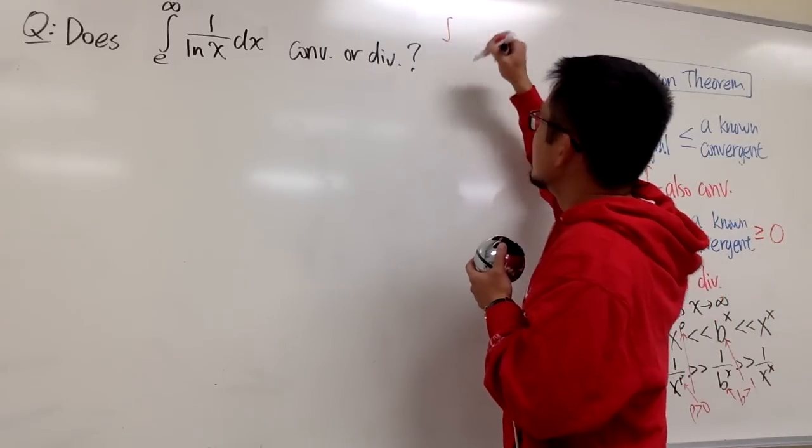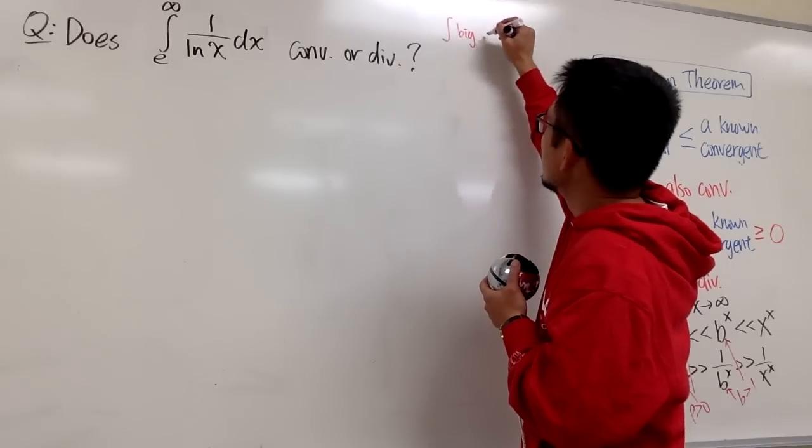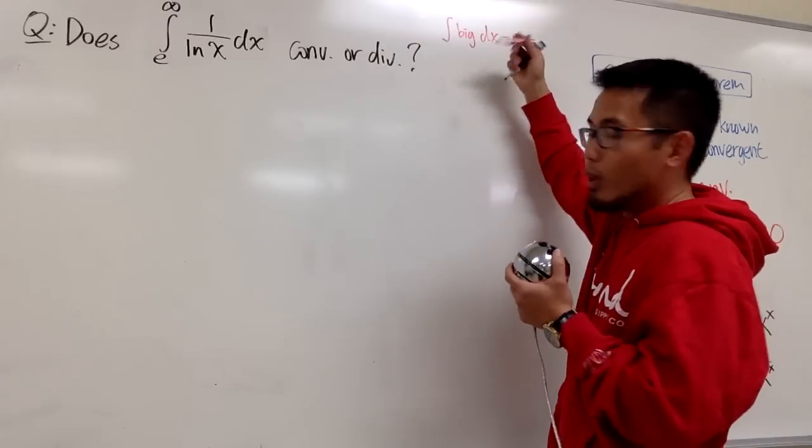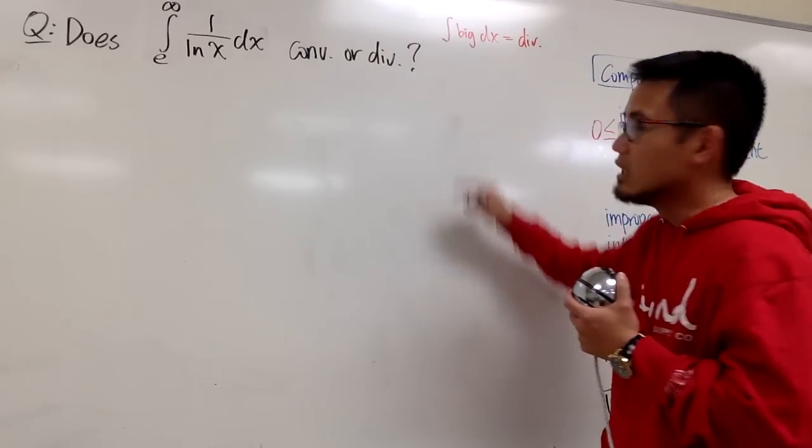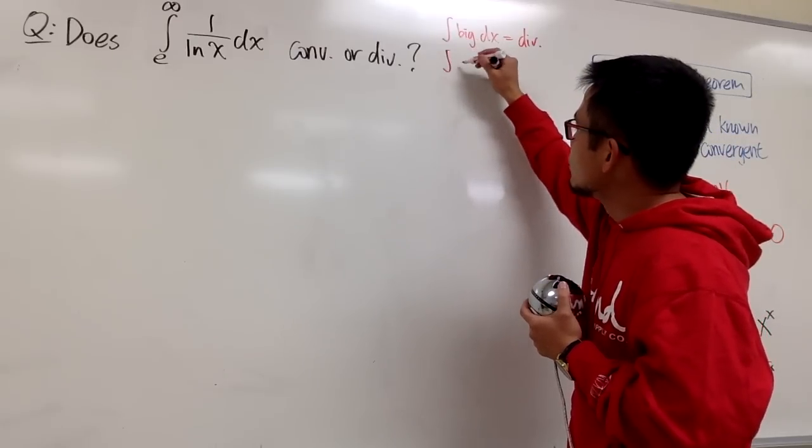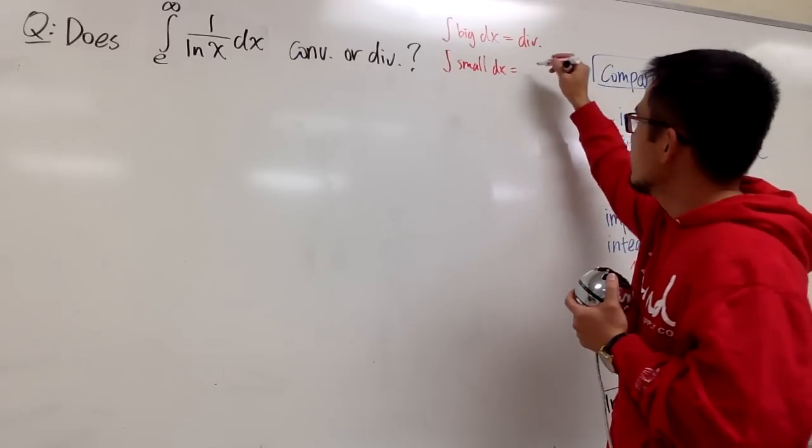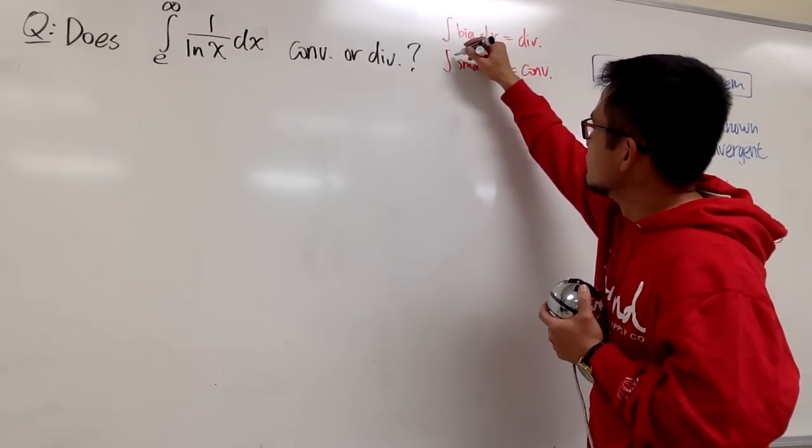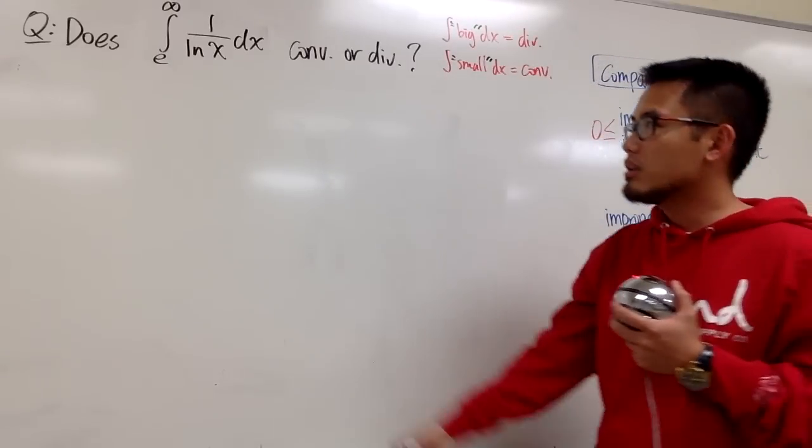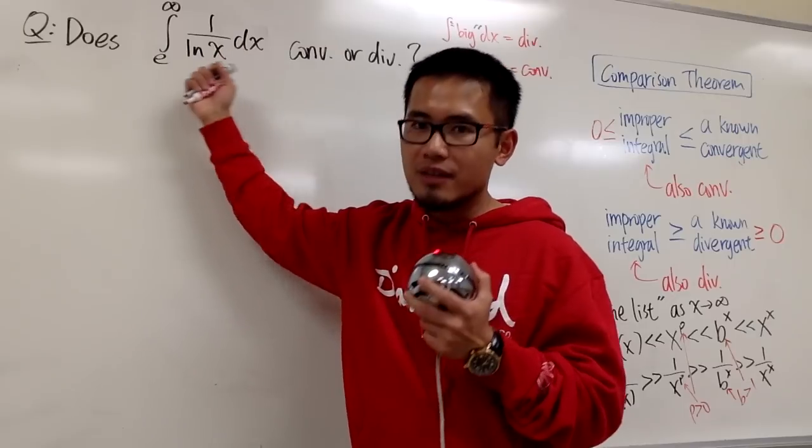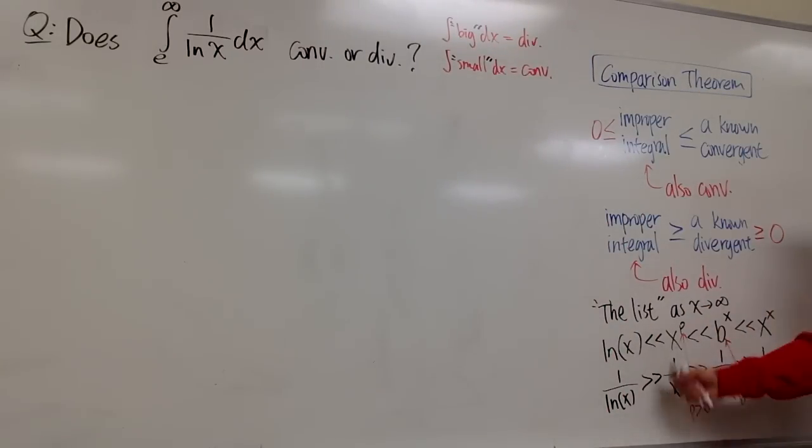And you should also think about this right here. Whenever you have an improper integral, if the inside is big enough, that's the only way to get to infinity. Diverges, if the inside is big enough. Likewise, if you have an integral, if the inside is small enough, that's the only way to end up with a convergent. So I'll put down small in the quotation mark, and big enough in the quotation mark.